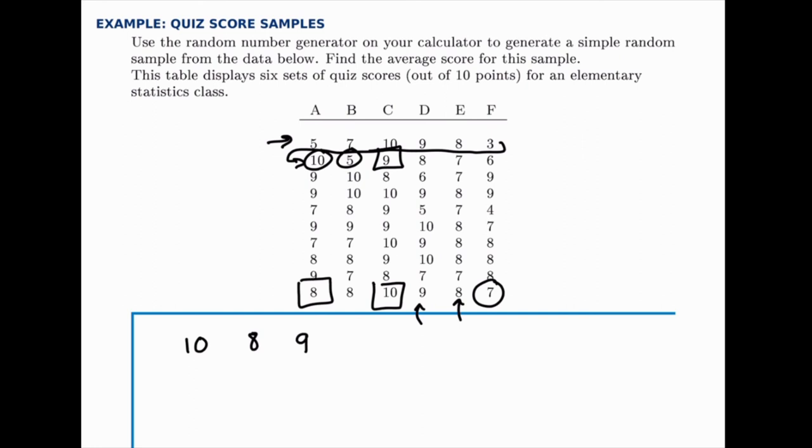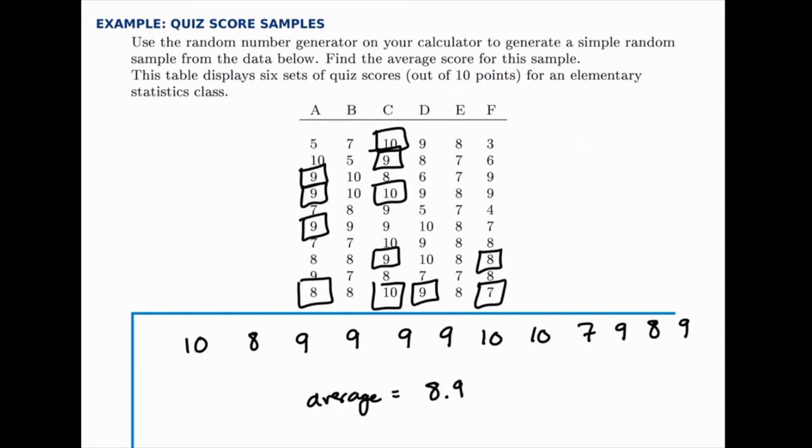We could continue on this process and select the other values but rather than going through and showing that in detail I'll just skip ahead to where we've selected all the numbers. So there you have the full sample of 12 values and the average there is about 9.